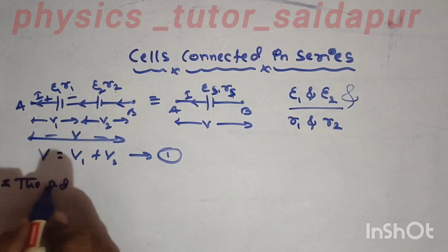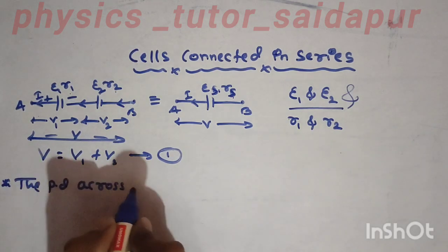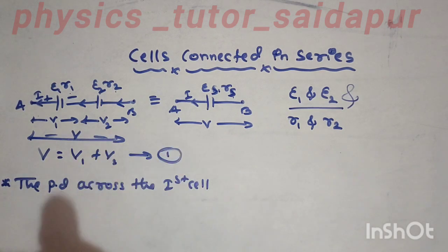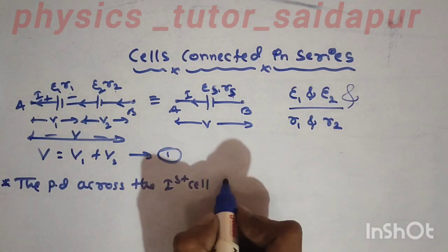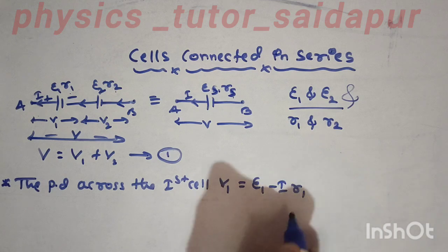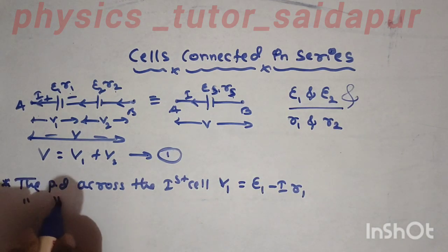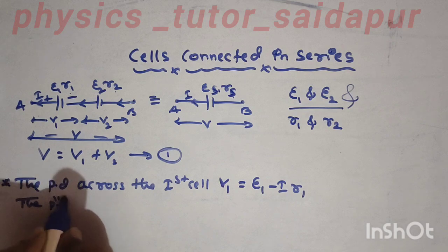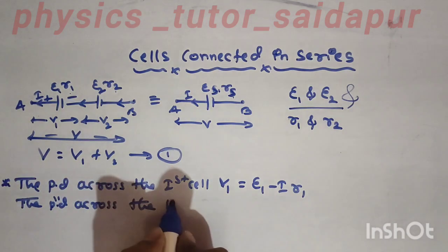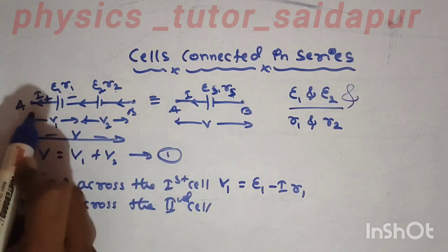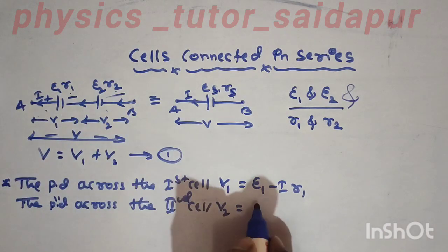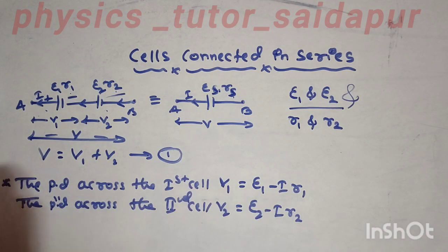The potential difference across the first cell: V1 equals E1 minus I times R1. The potential difference across the second cell: V2 equals E2 minus I times R2.